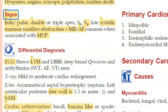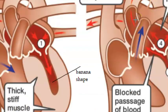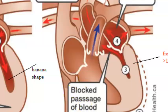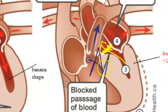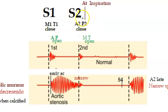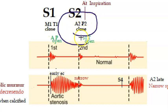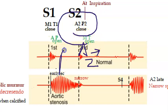Because blood is slow to leave the left ventricle, the aortic valve closes later, so A2 is delayed. This causes a narrow S2 split. A2 can move so late that it overtakes P2, giving a single S2 or even a reverse split S2 where the order becomes P2 then A2.